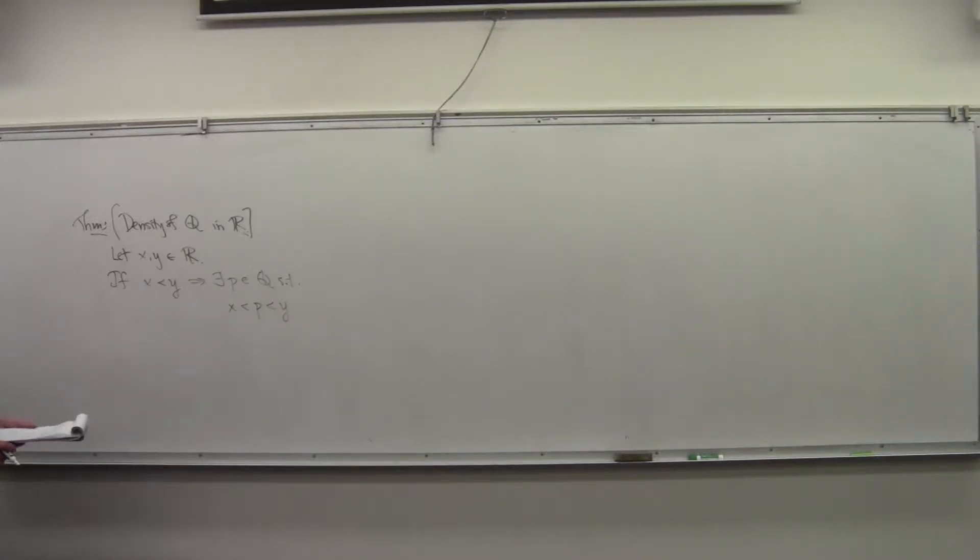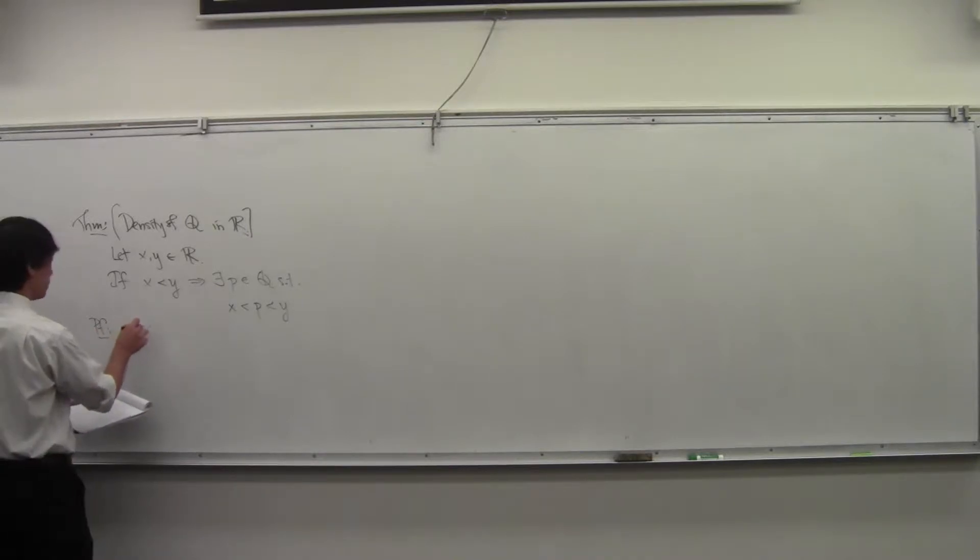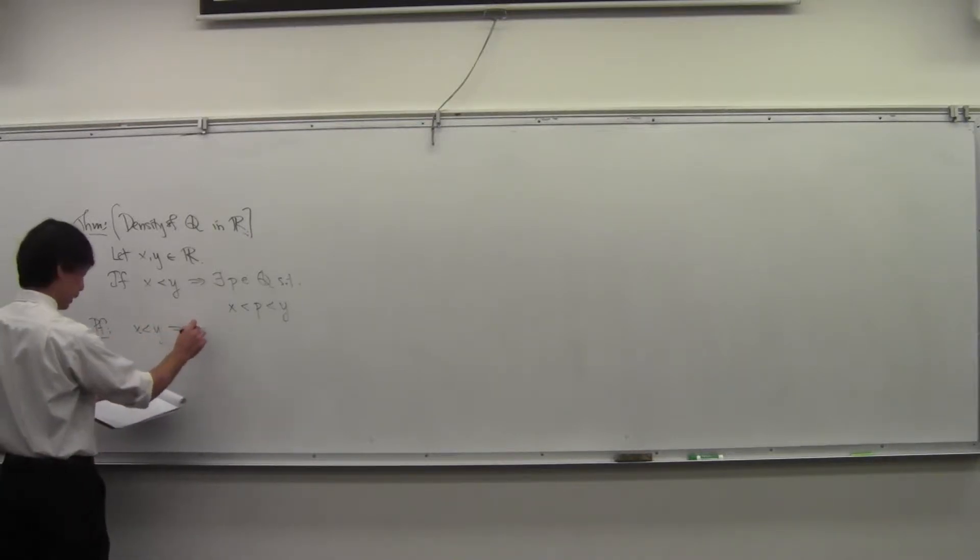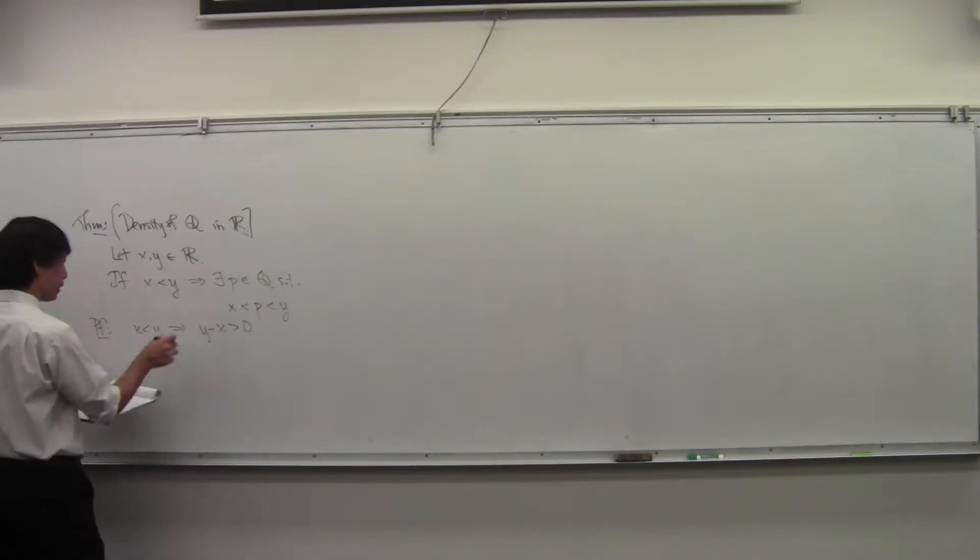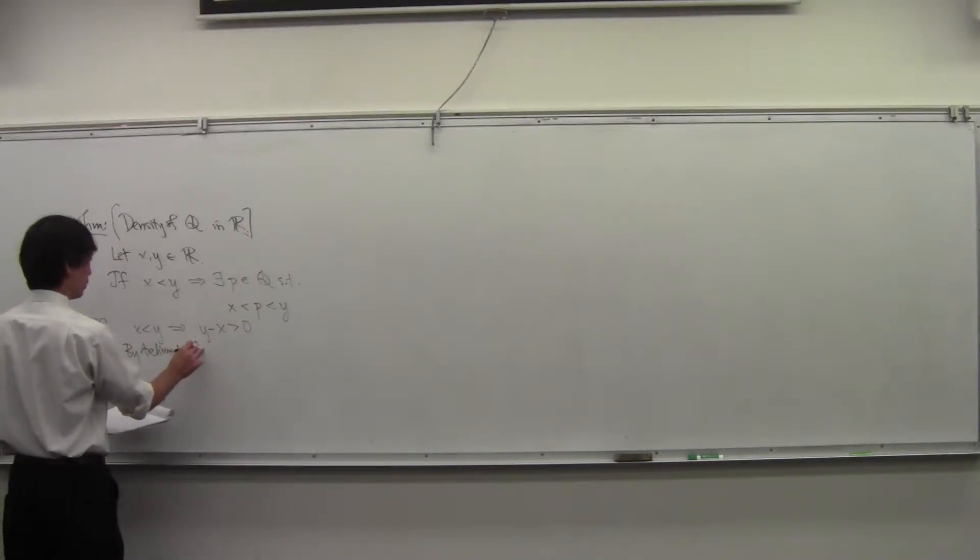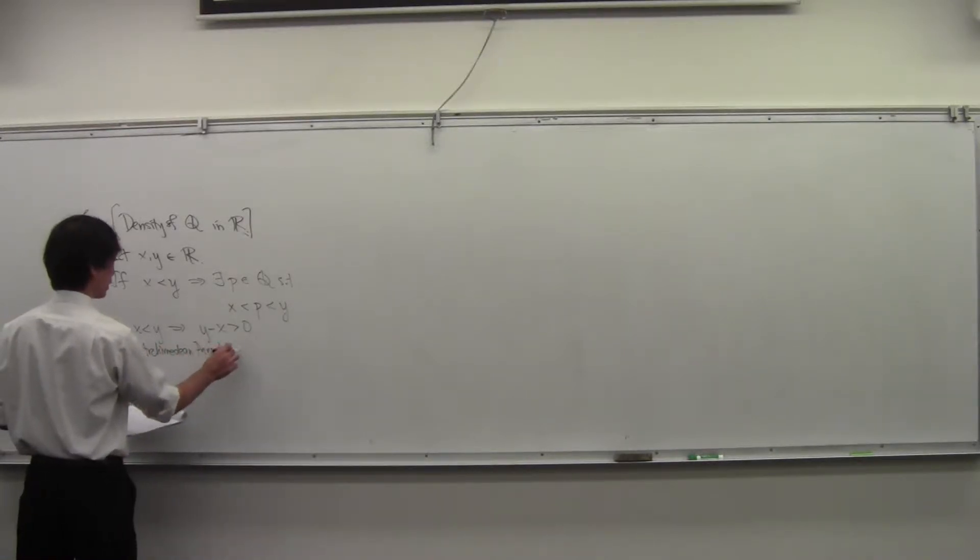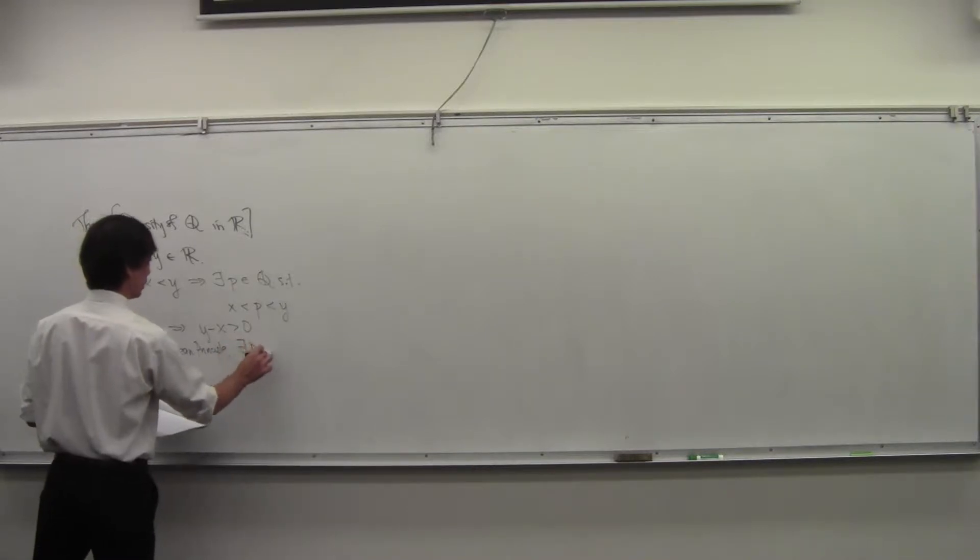Okay, and the proof of this will rely on the Archimedean property as follows. X being less than Y means that Y minus X is positive. By the Archimedean principle, there exists some natural number N such that N times (Y minus X) is bigger than 1.